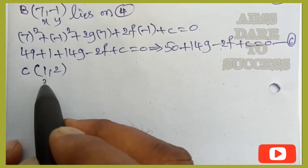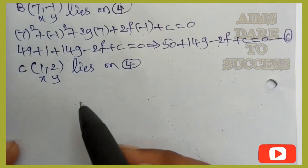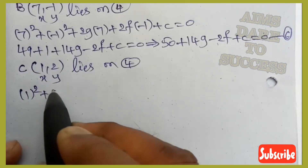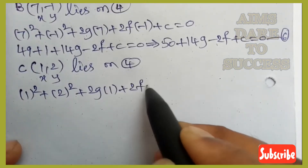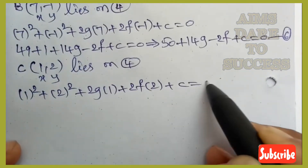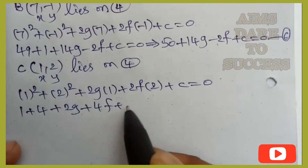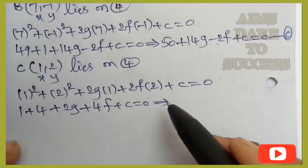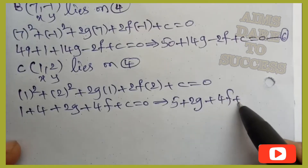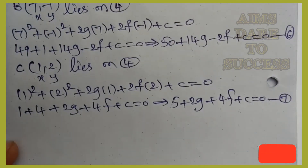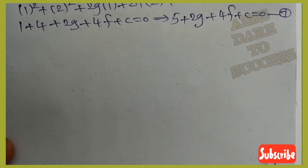Substituting point C(1,2) into equation 4: 1²+2²+2g(1)+2f(2)+c=0, giving 1+4+2g+4f+c=0, so 5+2g+4f+c=0 (equation 7). Now we can solve equations 5, 6, and 7.